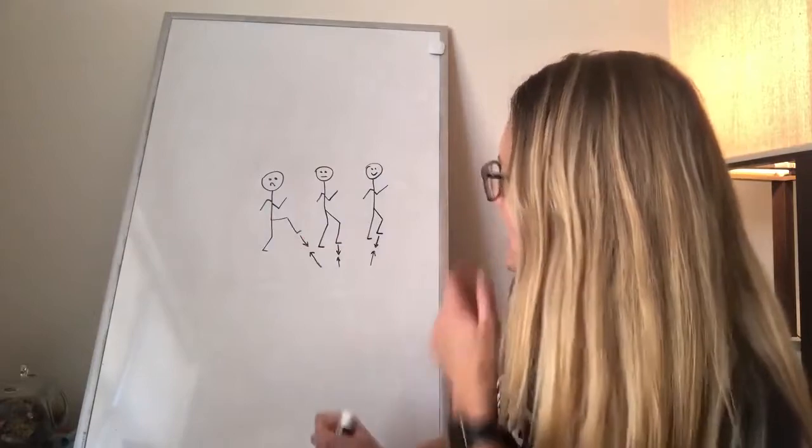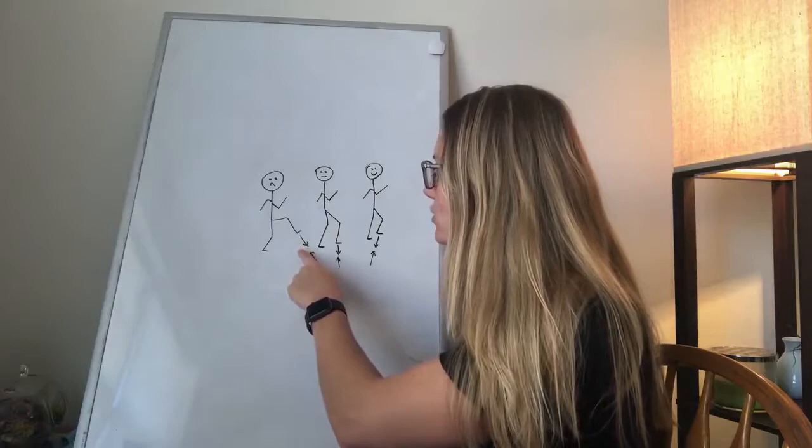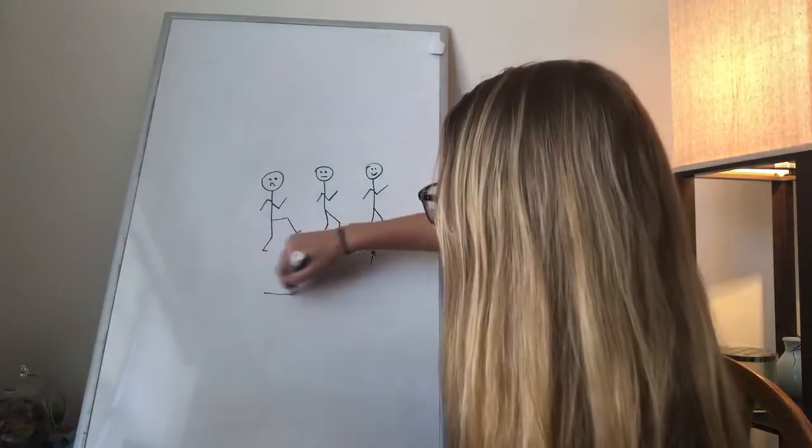And when you put this foot down, you can see the angle of this arrow comes down towards the ground like this.